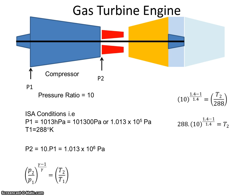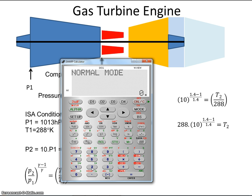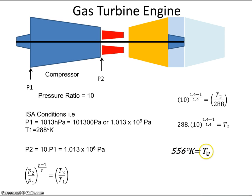So if I go to my calculator, I can punch in the numbers. I've got 288 multiplied by 10 to the power of, and that is a fraction, and that's 1.4 minus 1. And if I press equals here on my Sharp calculator, I should get a value of 556 degrees Kelvin. So T2 equals 556 degrees Kelvin.